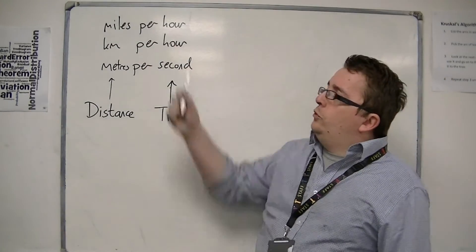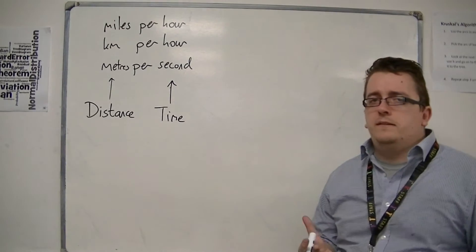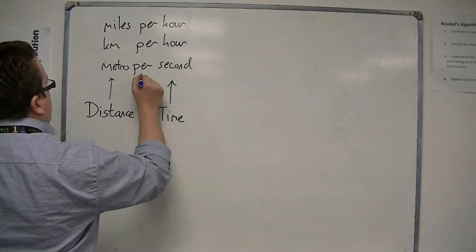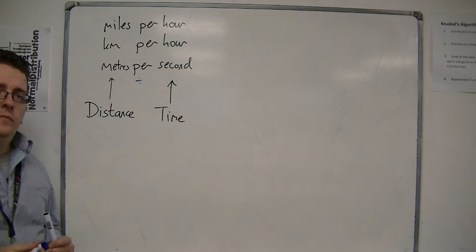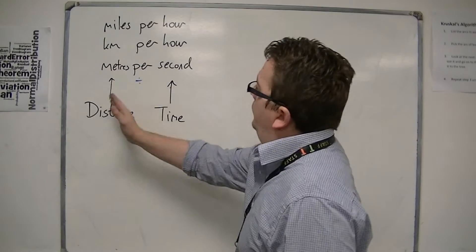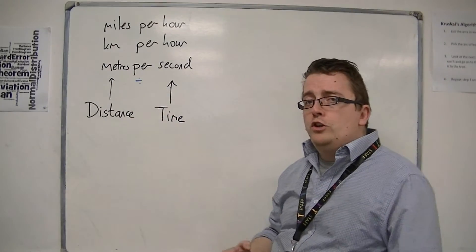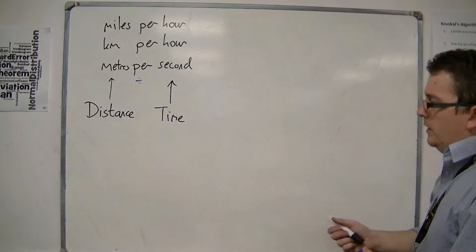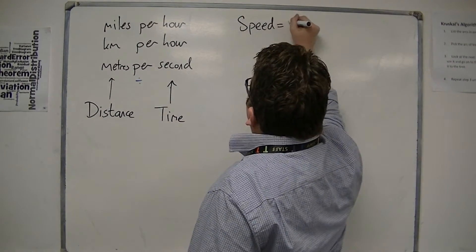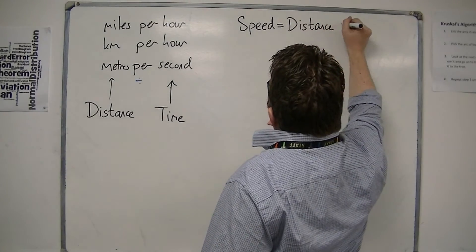Now there's this word that we use all the way through as well — this word 'per'. What does per mean? Well, per actually means divide. So, distance divided by time: distance split up into how long you've taken to cover it.